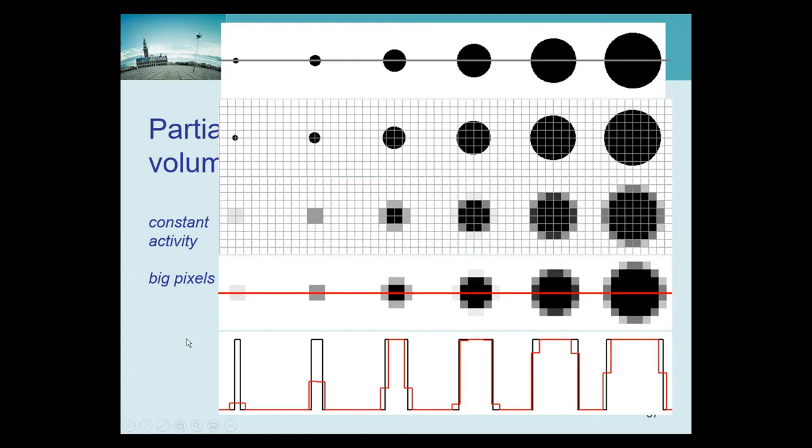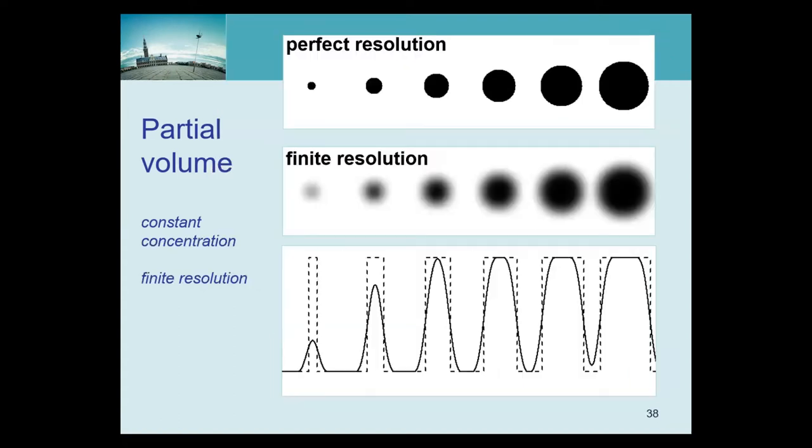So we say if that is a problem, well, we simply need to tell the gamma camera we're using smaller pixels. We can choose them pretty freely. So let's assume we did that, we tell the gamma camera that we want to use very small pixels.